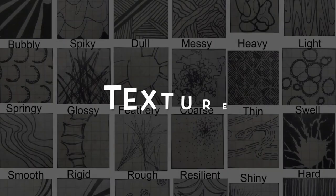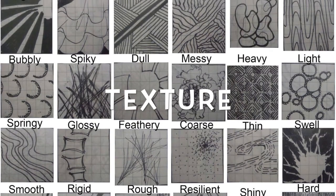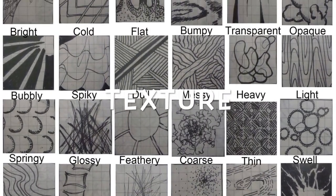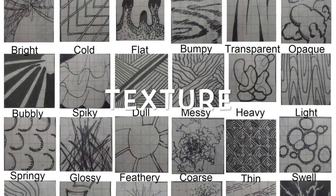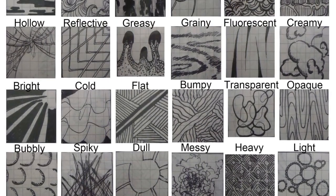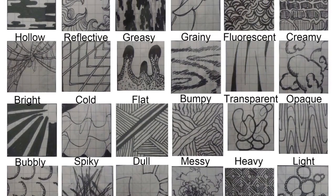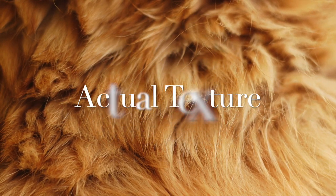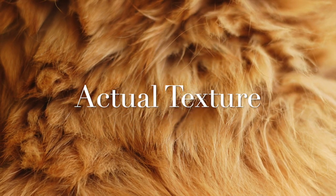Today we're going to be talking about texture and the different ways that artists use texture to create their artworks. There are two types of texture that artists use: actual texture and implied texture.